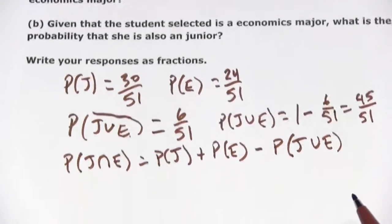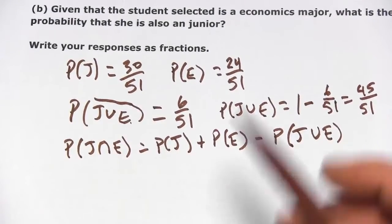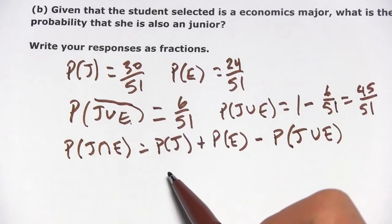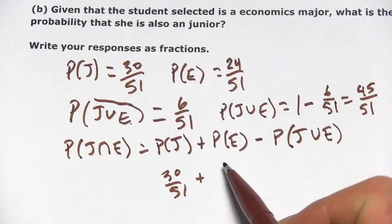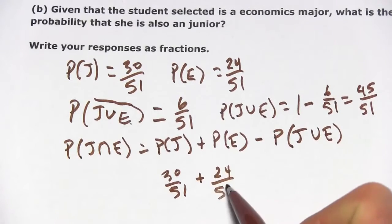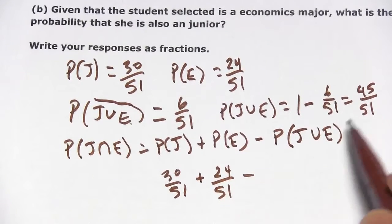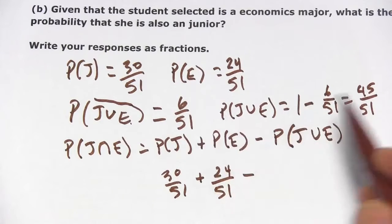And we've got all of those pieces, so we can just plug them into the formula. So that would be 30 51sts plus 24 51sts minus the union. We just figured that out.